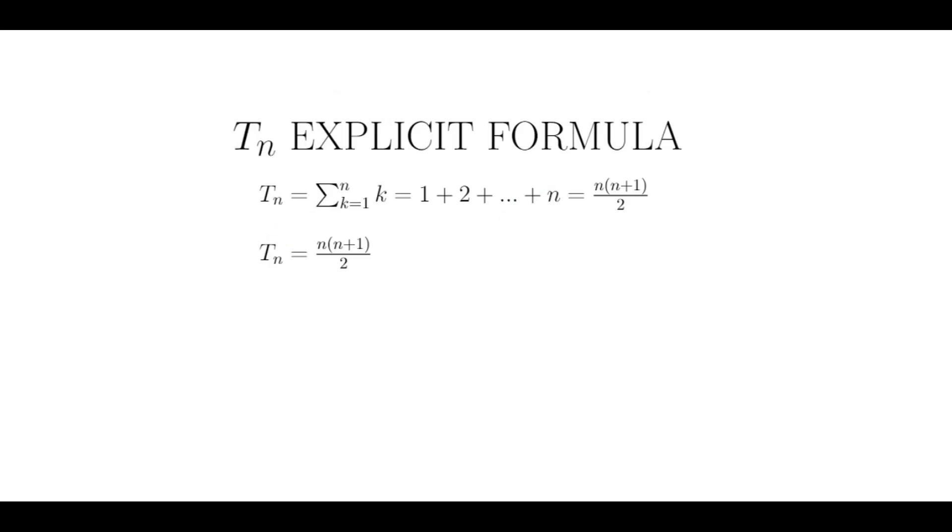Well, that's good for a recursive identity, but what if we wanted an explicit formula for the nth triangular number? Notice that Tn is equal to 1 plus 2 plus 3, all the way up to n. So Tn is the sum of positive integers from 1 to n. And there is a famous formula that can be proved with induction for this specific sum. The sum of integers from 1 to n equals n times n plus 1 divided by 2. This will be our explicit formula for the nth triangular number.